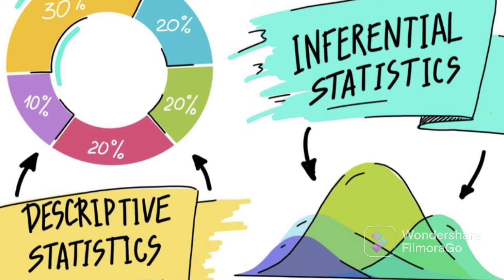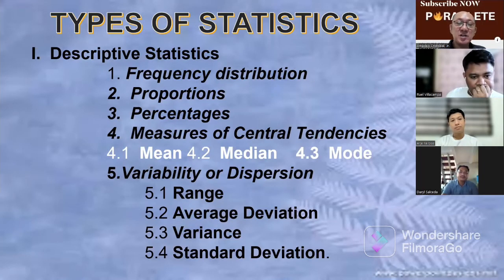A review of our statistics: you have the descriptive statistics that are used, frequency distribution, proportions, percentages, measurement of central tendencies. Then in your variation or dispersion, you can use the range, the average, variance, and standard deviation.